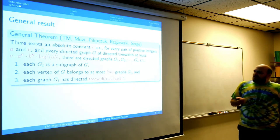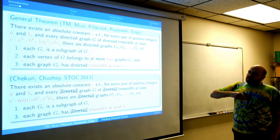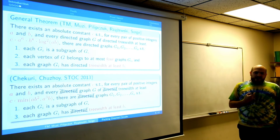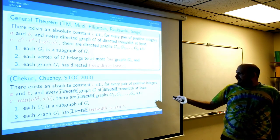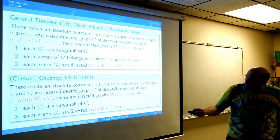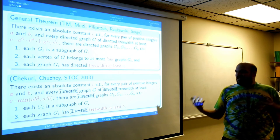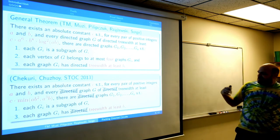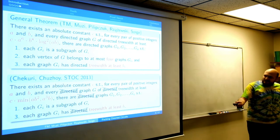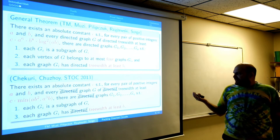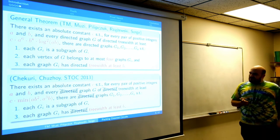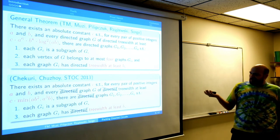Before the proof, let me relate this to another classical result from 2013 by Cechure and Cusoy in the undirected setting. They showed something similar: for every graph G of treewidth at least min(AB squared, A cubed B), there are graphs G1 up to GA, each a subgraph of G with treewidth at least B. In their result the subgraphs are vertex-disjoint, which is stronger, and they have better bounds — this is a famous result in the undirected setting.